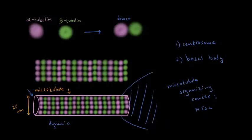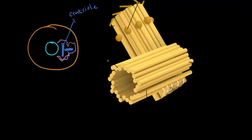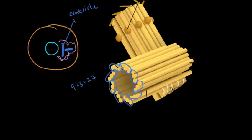The centrosome is an organelle found near the nucleus of a cell. It's made up of many different proteins, but we're going to focus mainly on two rods found in the centrosome — each one of these rods is called a centriole. If we took a closer look at the structure of the centrioles, they're made up of triplets of microtubules — three microtubules attached to each other — and there are nine of these triplets making up one centriole. So it takes 27 microtubules to make one centriole.